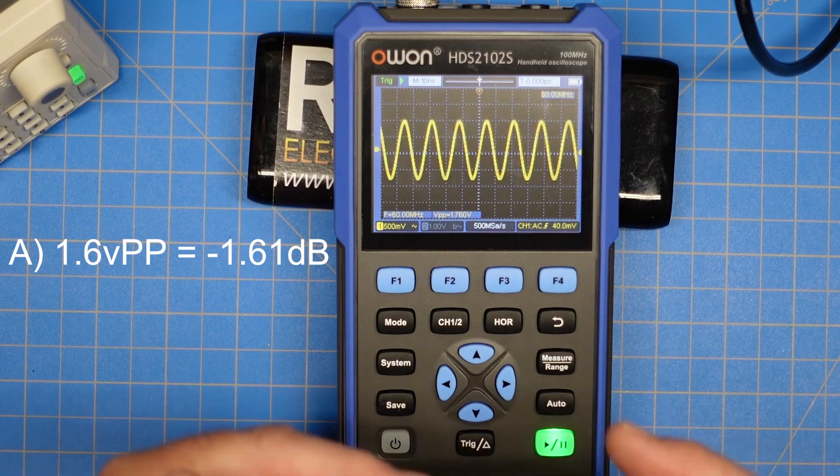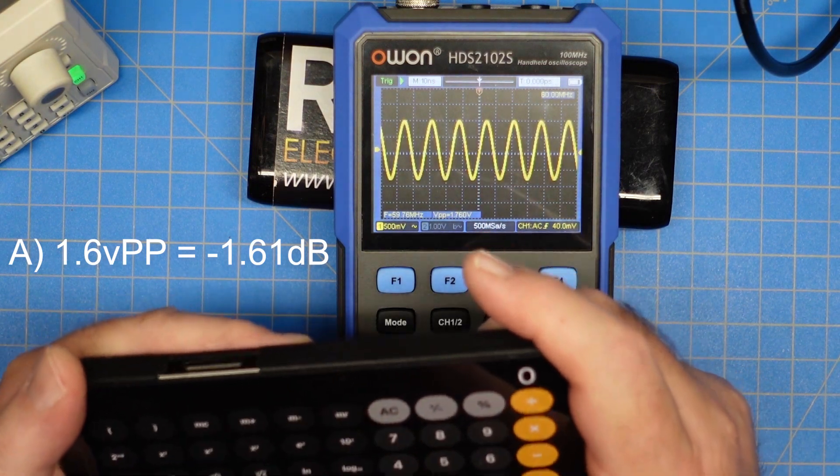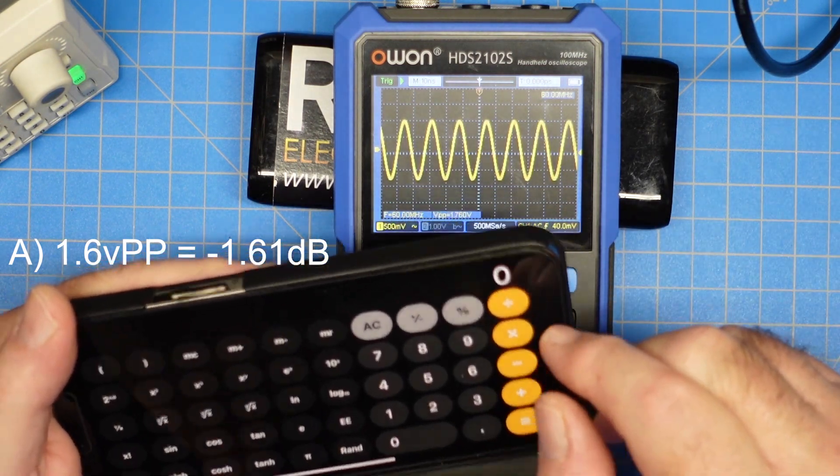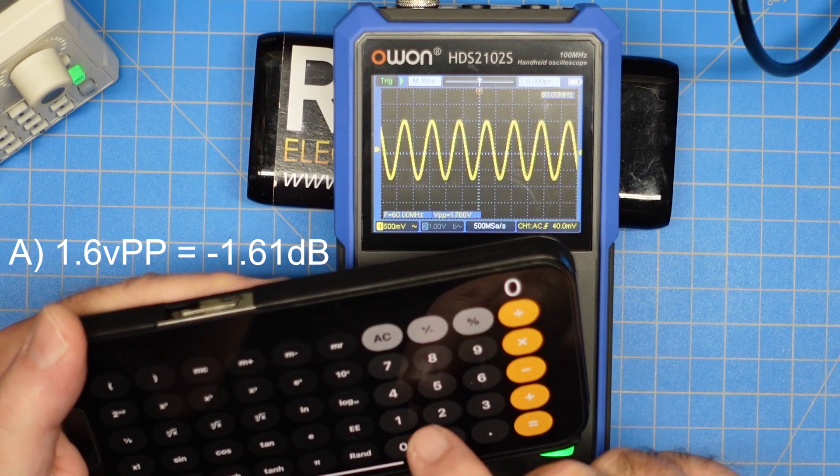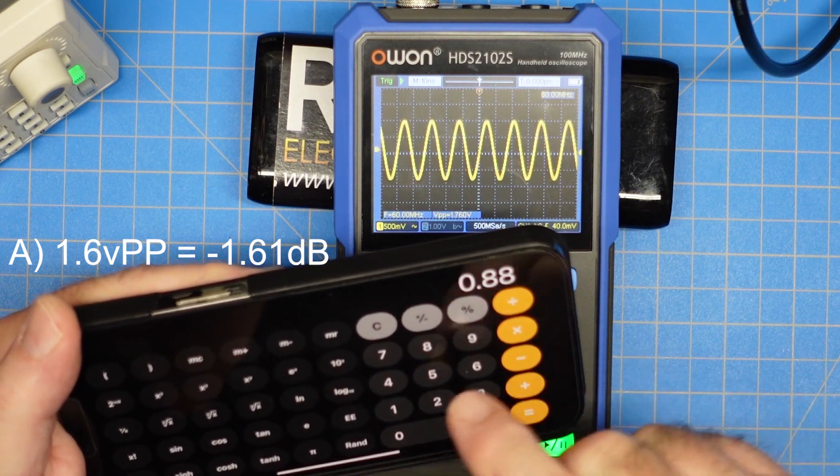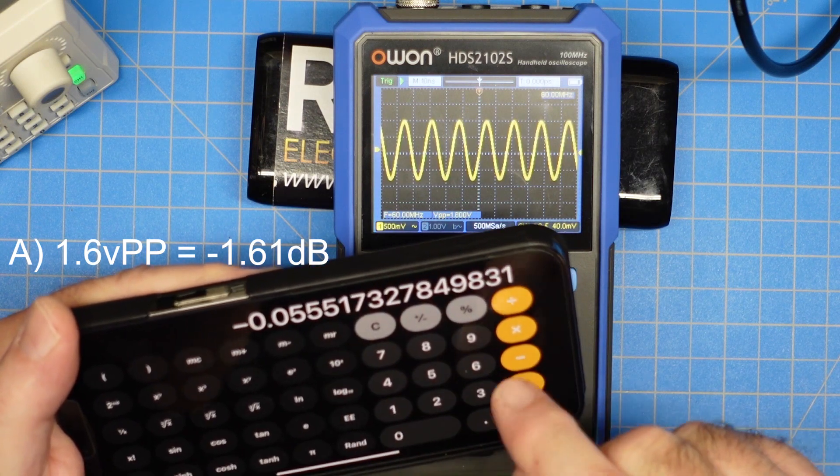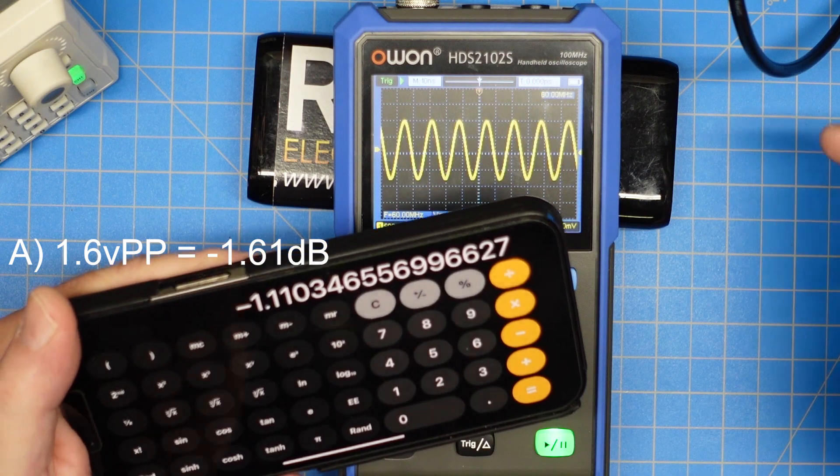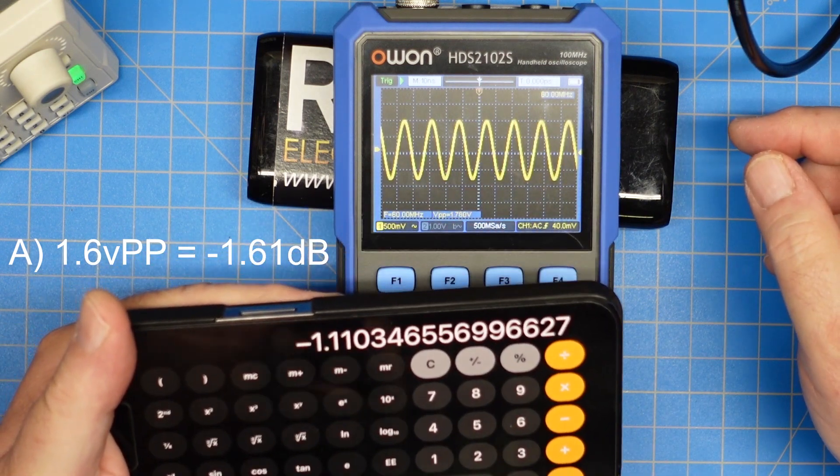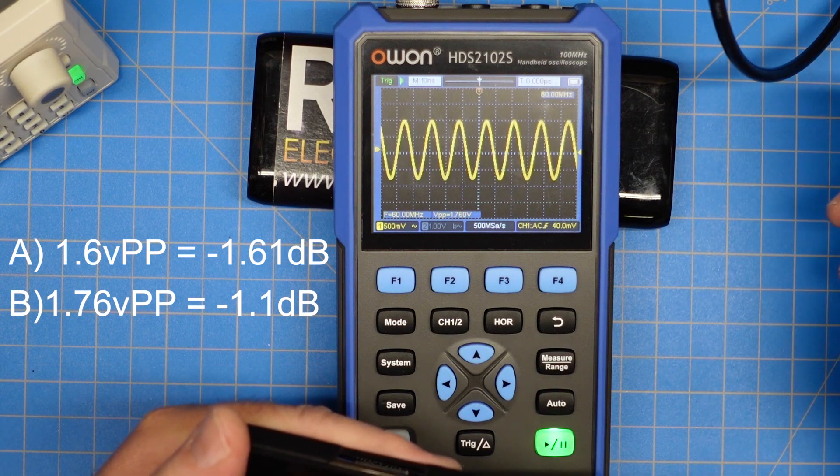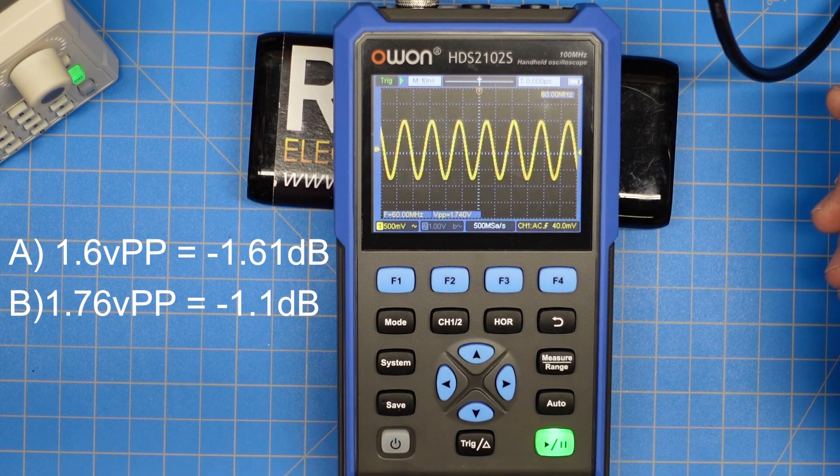So let's calculate the dB on that. We lost 1.61 dB with the other cable, the first cable. So 1.76 divided by 2 equals log 10 times 20. Now we've only lost 1.1 dB. That's just a cable swap. Cables matter. Cables matter a lot.